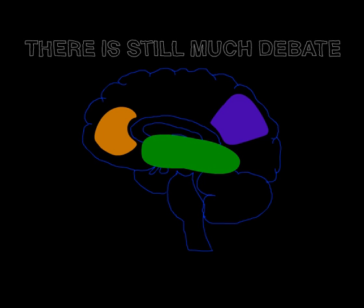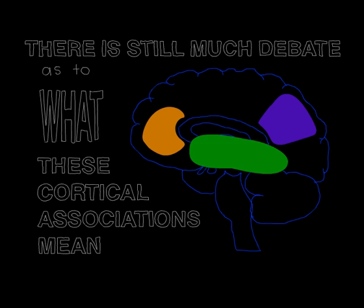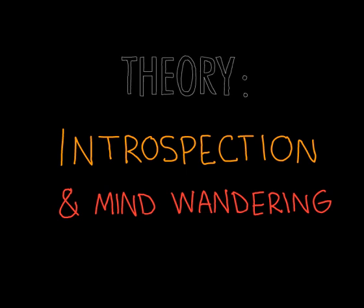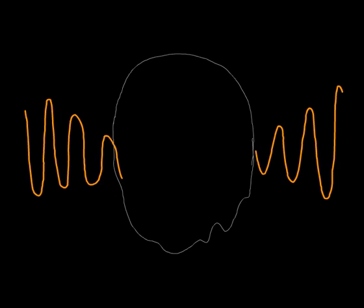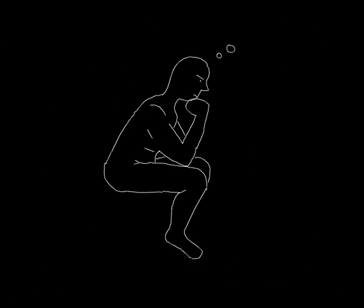There is still much debate as to what these cortical associations mean, if anything at all. One theory implicates them in introspection and mind wandering — essentially our stream of consciousness. This includes any thoughts not directly associated with the immediate external environment.